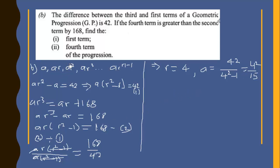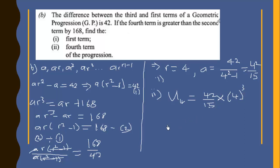Now we find the fourth term: u₄ = ar³ = (42/15) × 4³ = (42/15) × 64 = 2688/15, which gives us 179 and one-fifth.